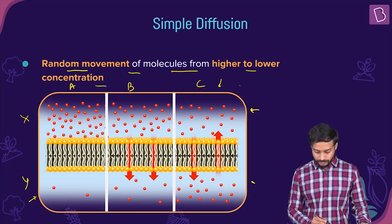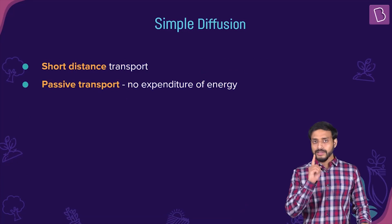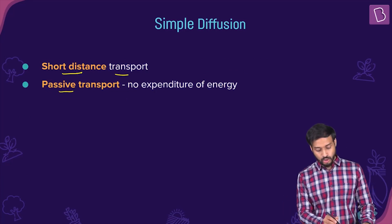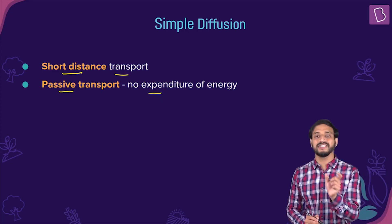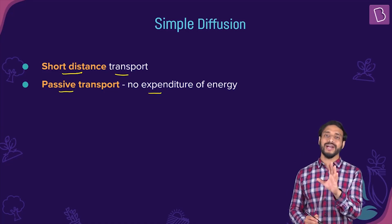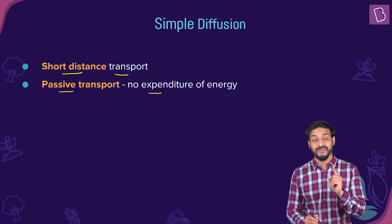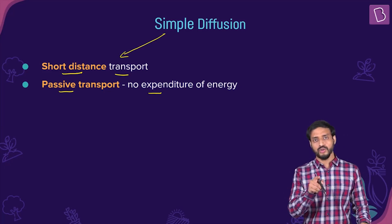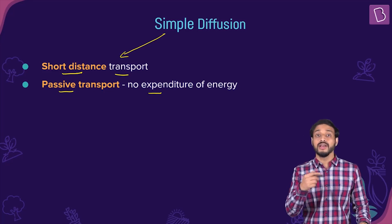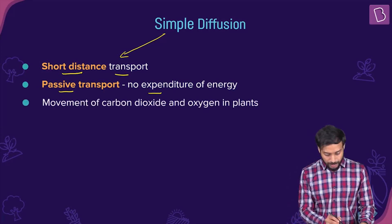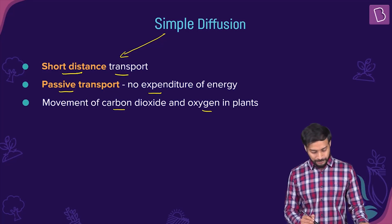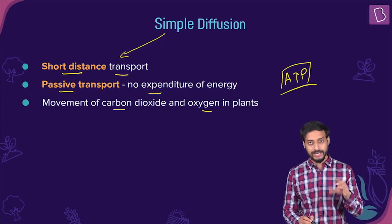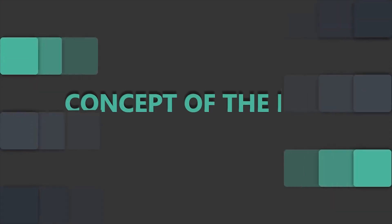Important points about simple diffusion: short distance transport happens by simple diffusion. It is passive transport — no expenditure of energy is required. A passive transport process is one where energy is not required and it happens normally without the use of energy. Movement of carbon dioxide and oxygen in plants happens by simple diffusion. ATP, the energy currency of living cells, is not required for simple diffusion.